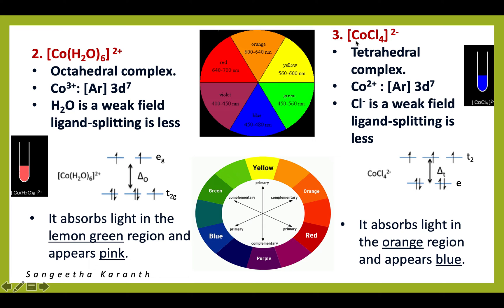The next complex is CoCl₄²⁻, where cobalt is coordinated with four chloro ligands, making it a tetrahedral complex with cobalt in the +2 oxidation state. Chloro is also a weak field ligand, so the splitting is lower, the energy required for excitation is less, and the wavelength absorbed is higher. This complex absorbs light in the orange region, and the complementary color to orange is blue, so the complex appears blue in color.